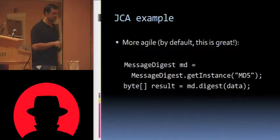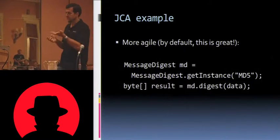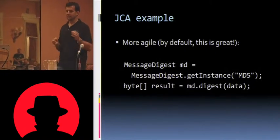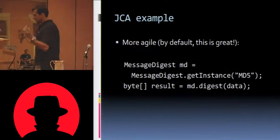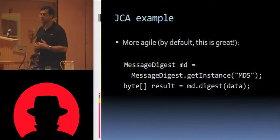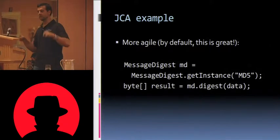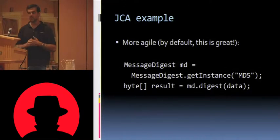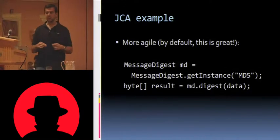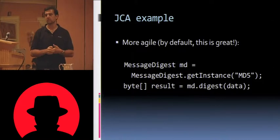Here's an example of what this looks like in code, and it's identical to .NET except the names have changed. You say MessageDigest — the abstract factory class — md equals MessageDigest.getInstance("MD5"). Having an abstract MessageDigest, we give it an array of bytes, and we get back an array of bytes, which is the hash.